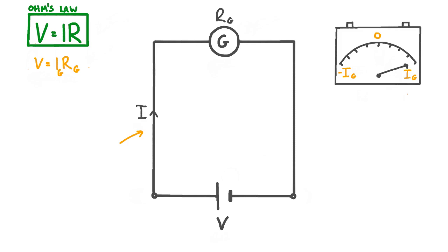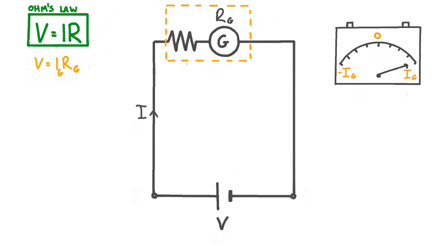If we want to increase the range of voltages that we can measure, then we need some way of limiting the current in this circuit to prevent the galvanometer's needle from reaching maximum deflection. Fortunately, there's a pretty simple solution. All we need to do is connect a resistor in series with the galvanometer. The function of this resistor is that it increases the overall resistance in the circuit, thus decreasing the current in the galvanometer. This means that together these two components can be connected to a larger potential difference without the needle on the galvanometer reaching maximum deflection. And this is actually all we need to build a voltmeter — just a galvanometer and a resistor connected in series.